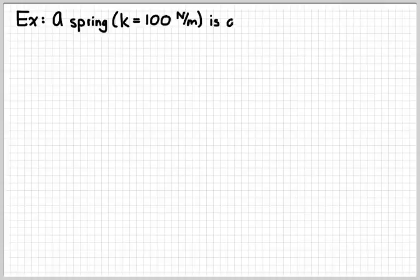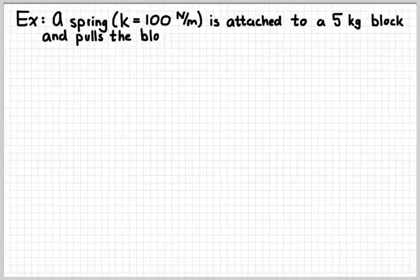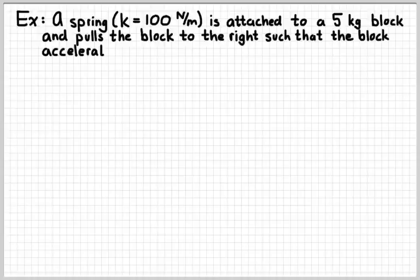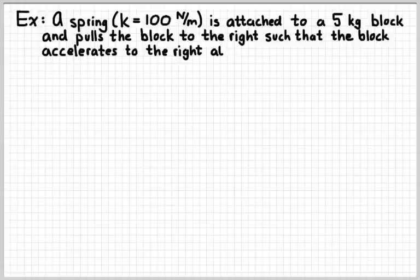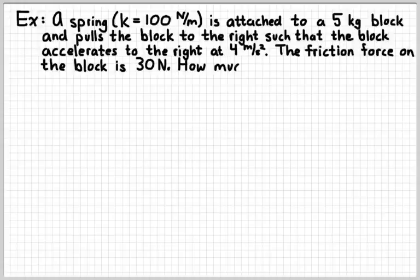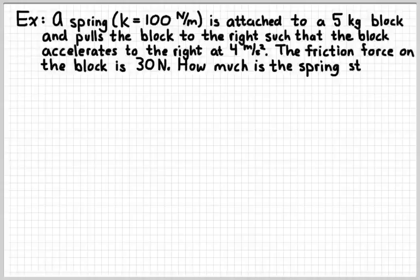So let's look at a real quick example. Suppose that we took a spring, which the spring constant is known to be 100 newtons per meter. That's actually a pretty weak spring. The spring is attached to a 5 kilogram block. And then we pull the spring to the right so that it pulls the block to the right, such that the block accelerates at 4 meters per second squared. And then we magically know that the friction force on it is 30 newtons. The question is how much is the spring stretched?